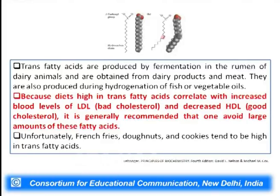One important fatty acid of concern is the trans fatty acid. It is produced by fermentation in the rumen of dairy animals and obtained from dairy products and meat, and also produced during hydrogenation of fish or vegetable oil. Trans fatty acids are referred to as bad fatty acids because they increase blood levels of LDL (low density lipoproteins), the bad cholesterol, while decreasing HDL (high density lipoproteins), the good cholesterol. Doctors recommend avoiding products high in trans fatty acids such as french fries, donuts, and cookies.